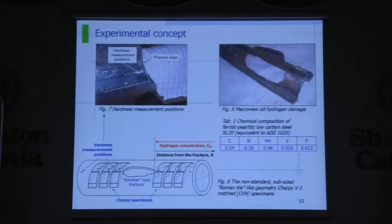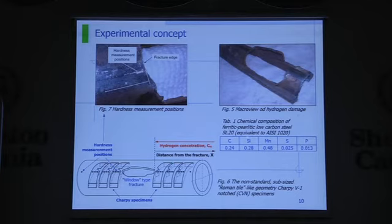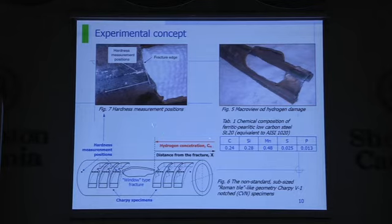This is the boiler tube with damage, and here we have special non-standard sub-size specimens used for the investigation. For the qualification of mechanical properties, this is a plain carbon steel — very common — with the steel grade as Vasileum 20. We have the chemical composition, and importantly, hydrogen concentration at different distances. The highest concentration is near the inner wall under high pressure, so different specimens for investigation have different hydrogen concentrations.